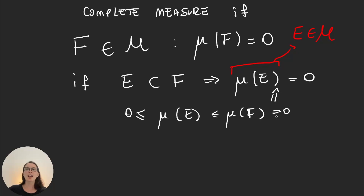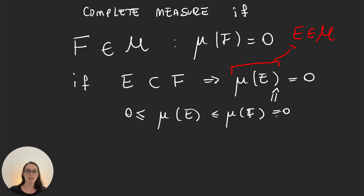The important thing is those sets are in the sigma algebra — those sets are measurable. And having complete measures is a desirable property. Let's say you're working with some measure and you find a set of measure 0. You want to be able to work easily with that set, and working easily with it means being able to calculate, for example, the measure of its subsets. If your measure is not complete, you have no idea if the subsets of your set are measurable or not. But having the property of a measure being complete gives you complete comfort in working with this measure.